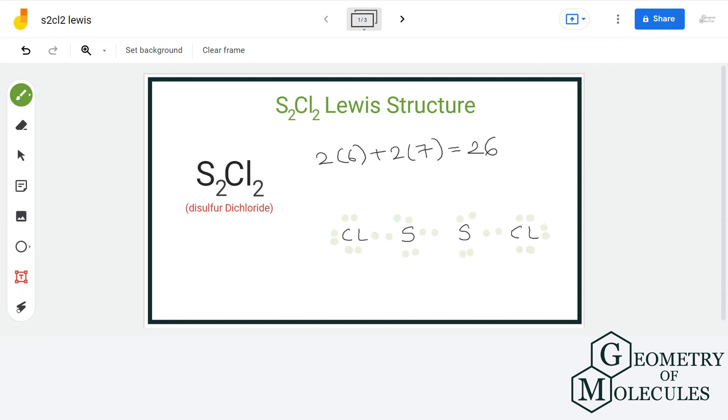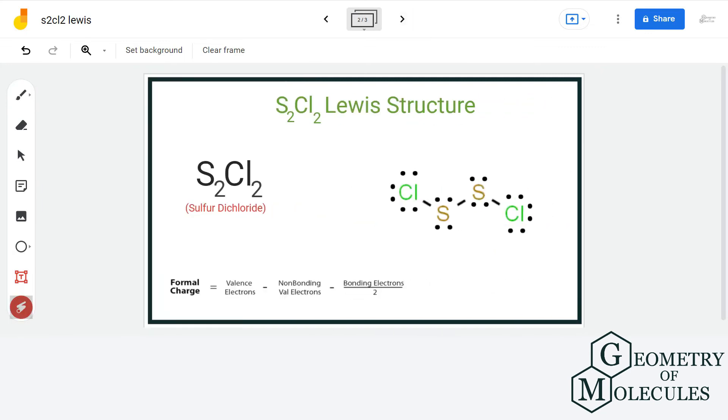Now, all the atoms has complete outer shell in this Lewis structure. Let us calculate formal charge of each atom just to confirm that this is the best possible Lewis structure for S2Cl2.